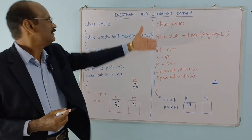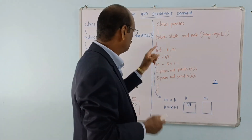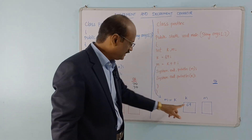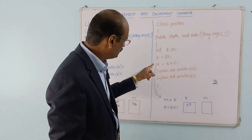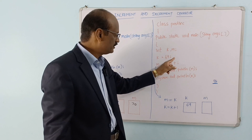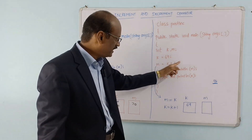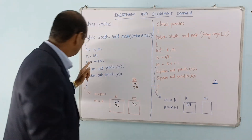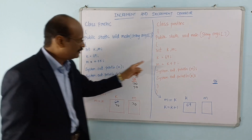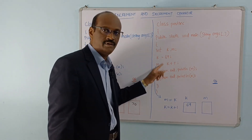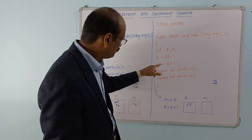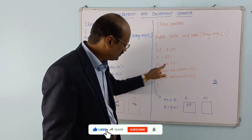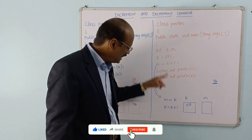Now here is the post-increment operator. We have two variables: k equals 69, m equals the variable. The statement is m equal to k plus plus — we are using post-increment operator. This statement is equivalent to two statements. For the post-increment operator, first the assignment operation will be performed.